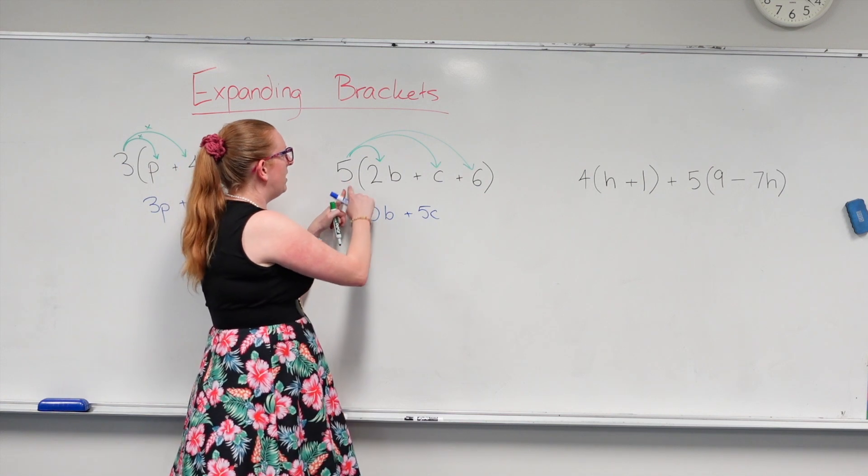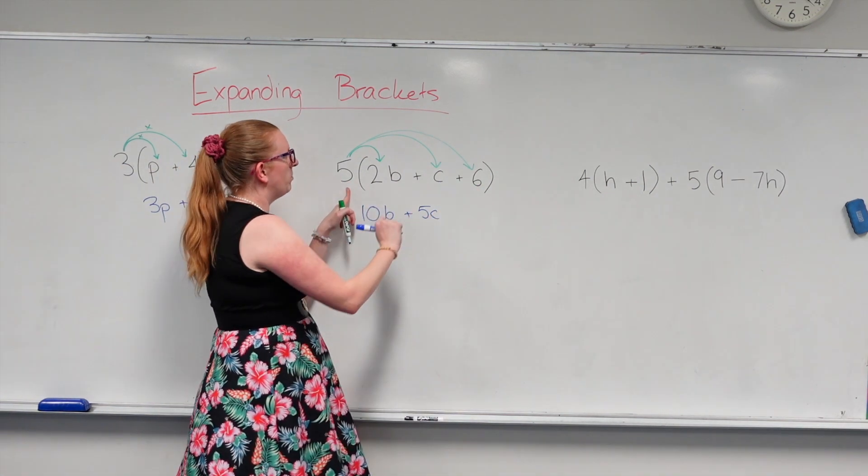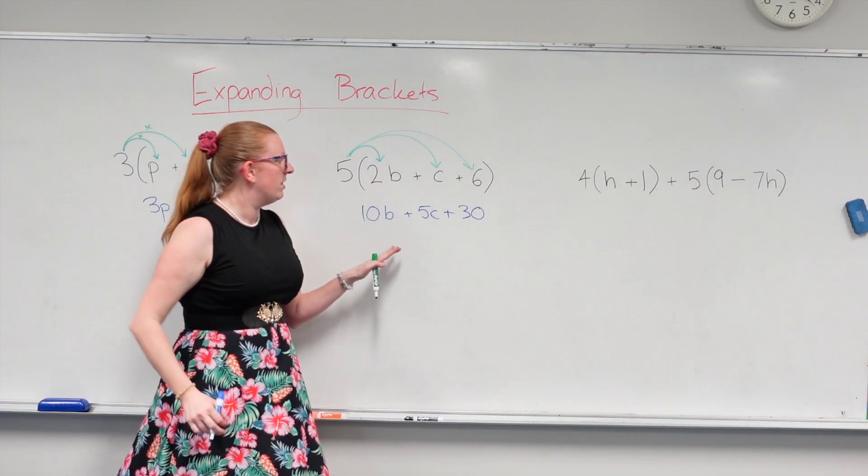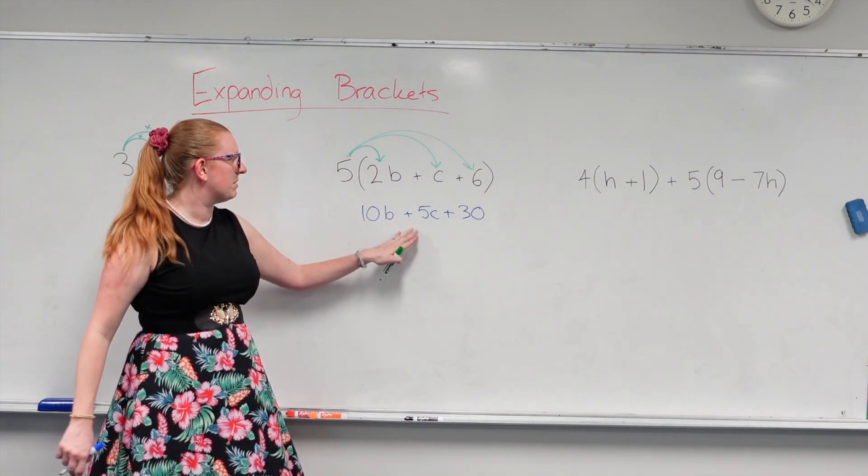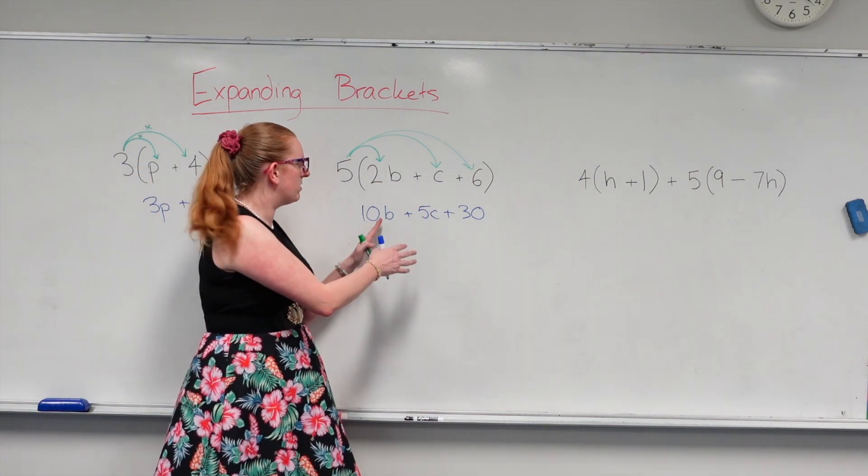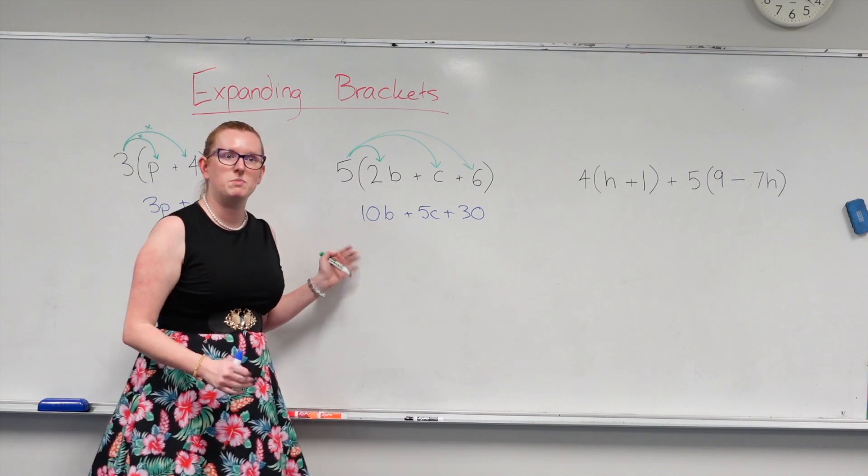Now I'm going to go 5 times 6, which gives me 30. And because it's a positive 30, I'm going to put a plus. There we go. Now I've got 10b plus 5c plus 30. And I can't simplify these any further because they're not like terms. So that's my answer.